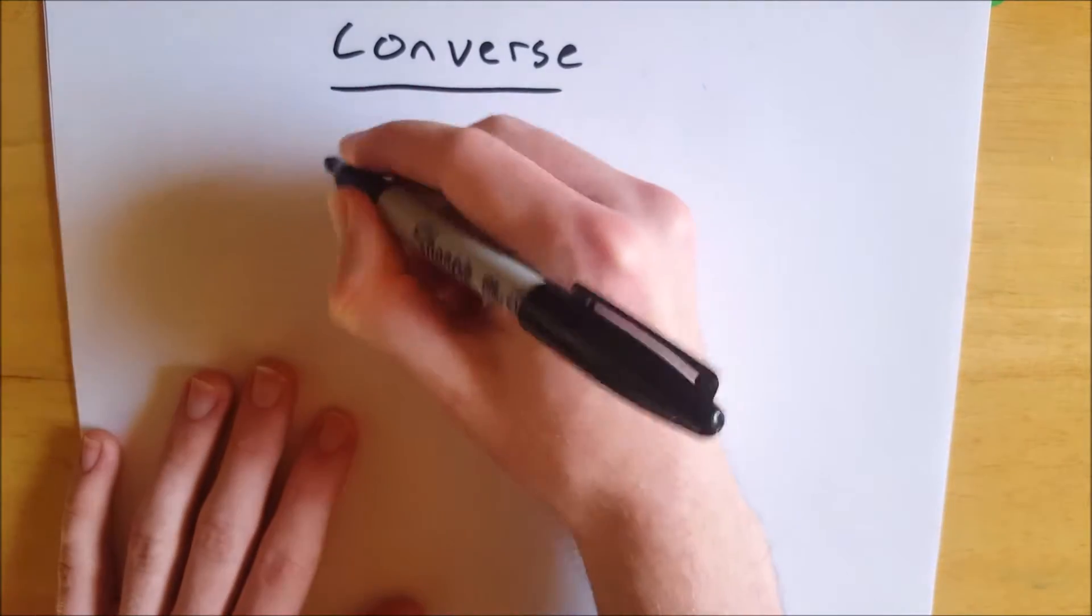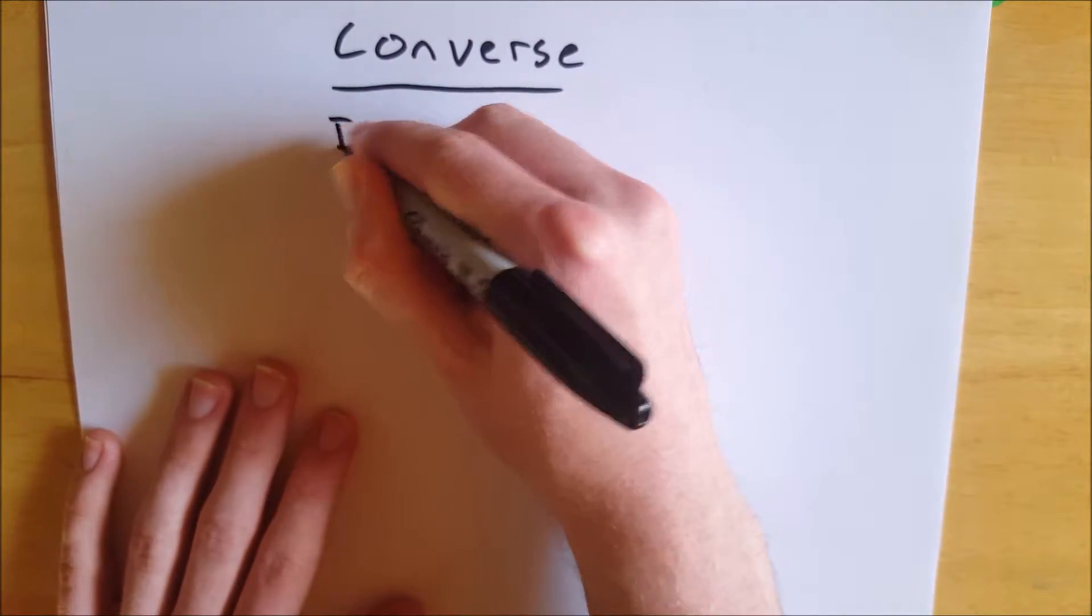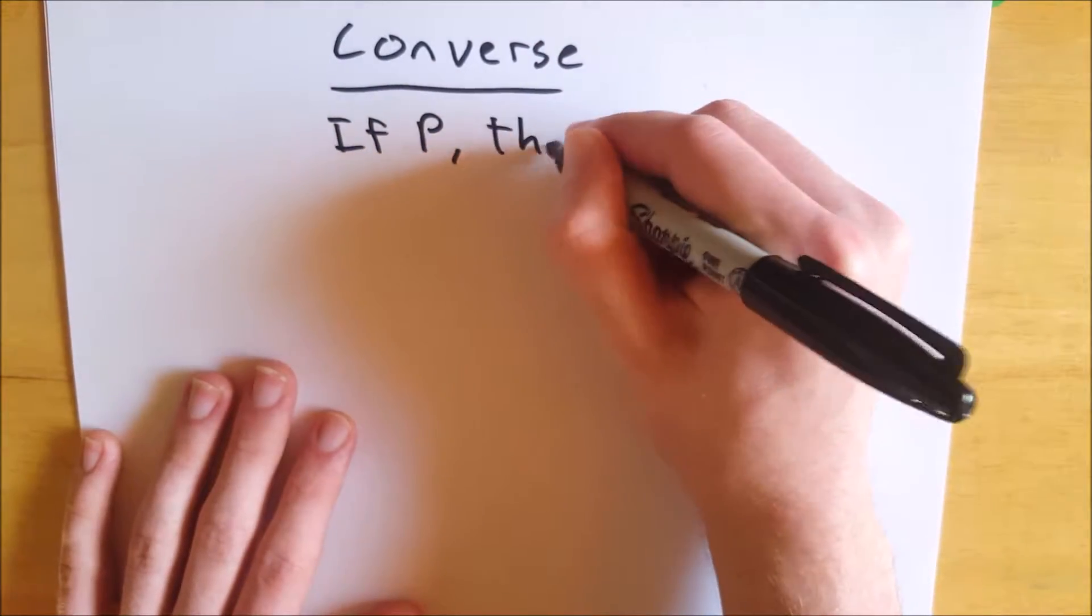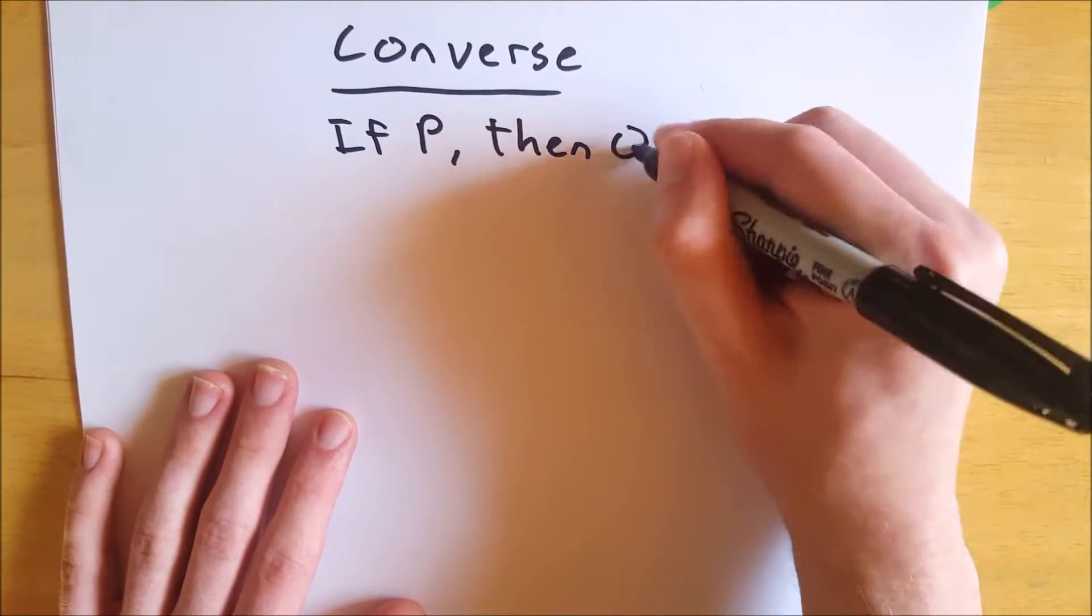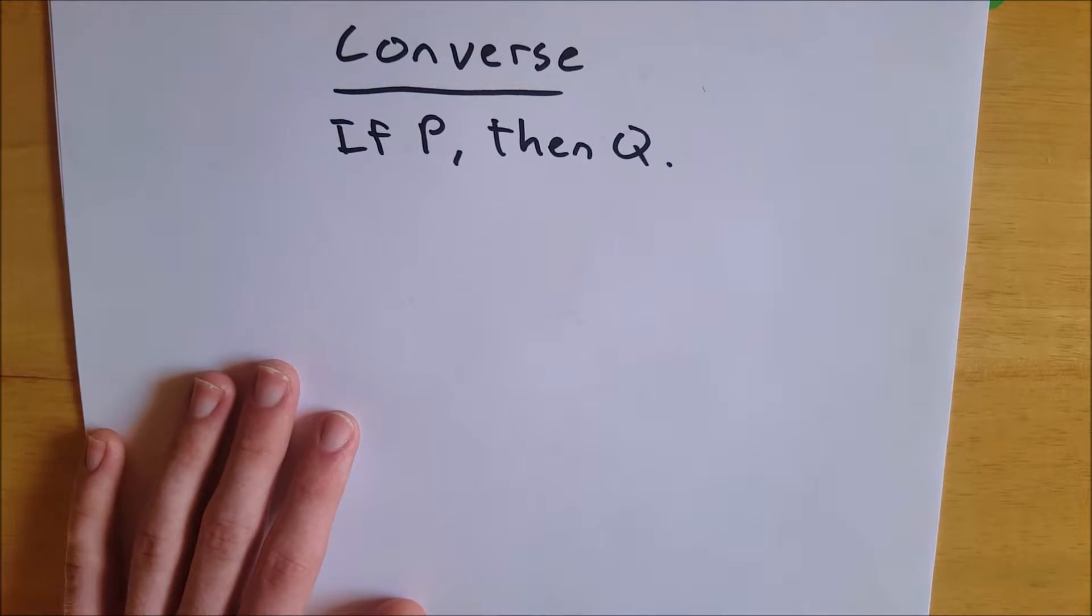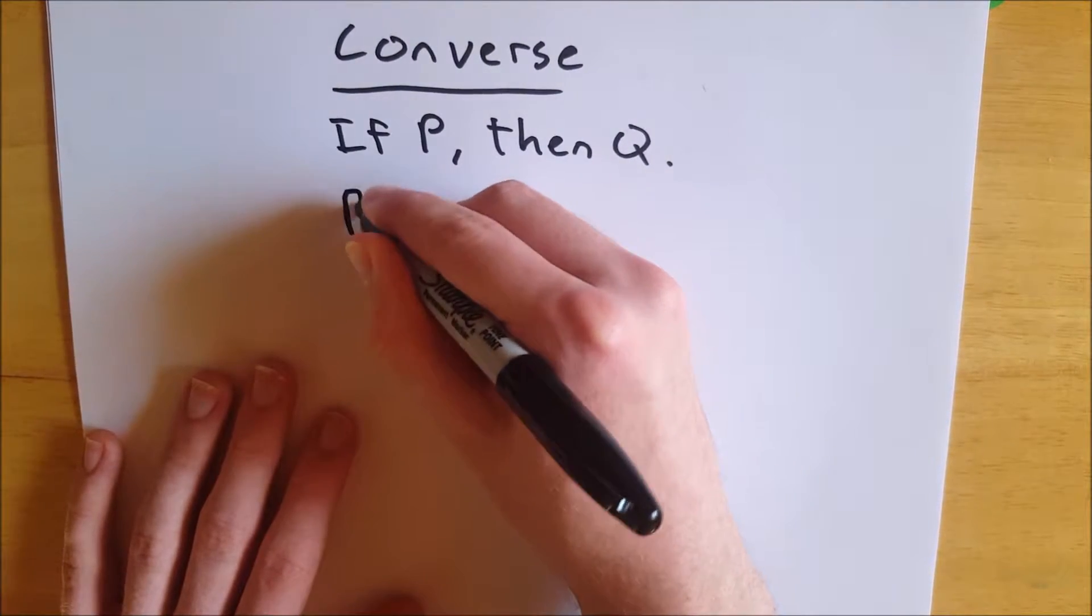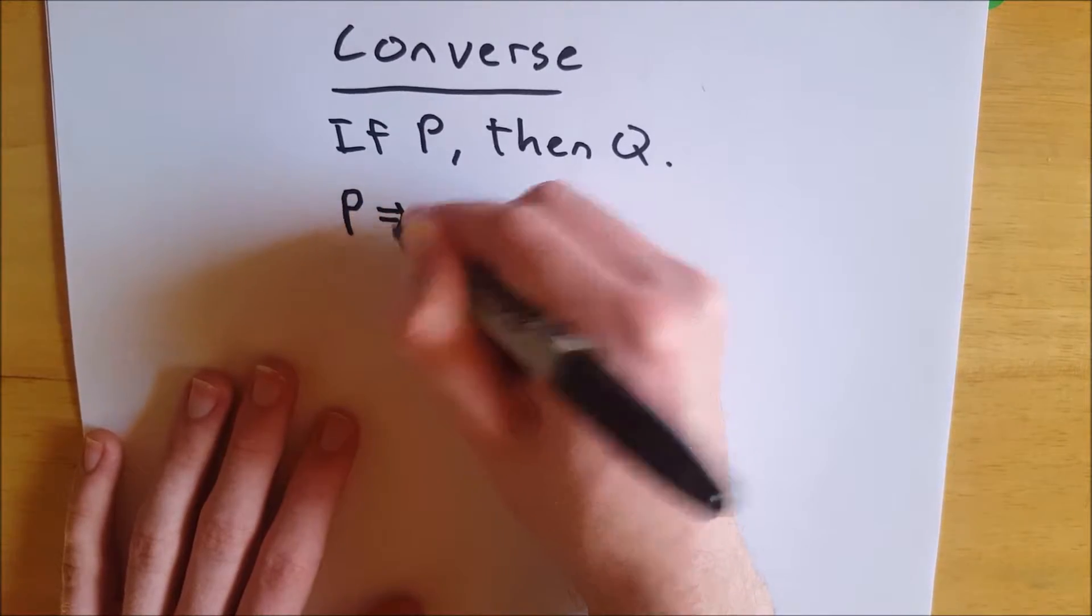So suppose we have a conditional statement, just a generic one, if P, then Q, and we want to figure out what the converse of this statement is. Well, first, let's write the original statement in some shorthand, which is P implies Q.